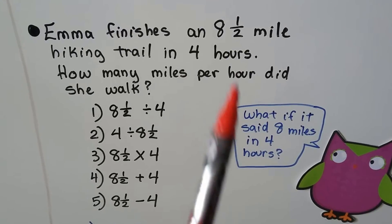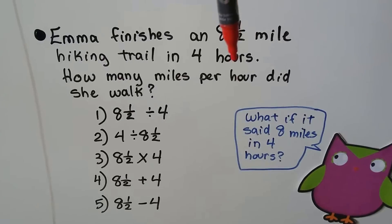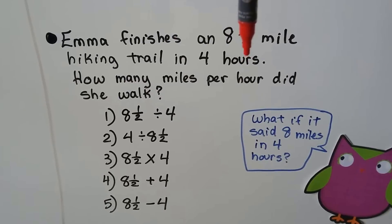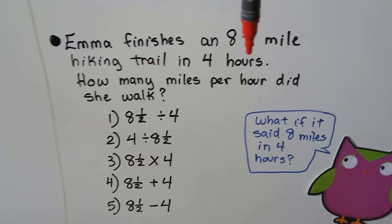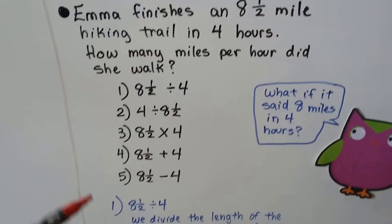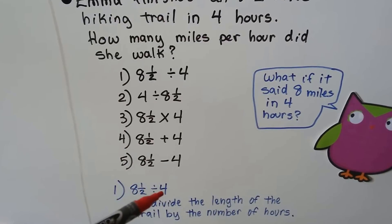So if a fraction is confusing you, take it away. She went eight miles in four hours. Well, that means she went two miles an hour. We're dividing. So the answer would be number one, eight and a half divided by four.